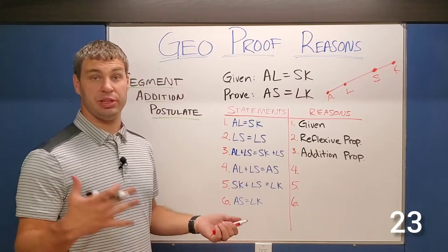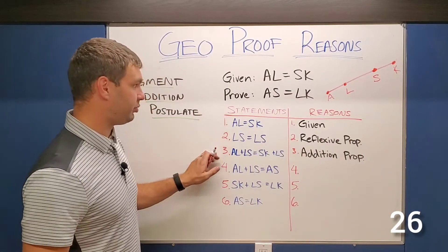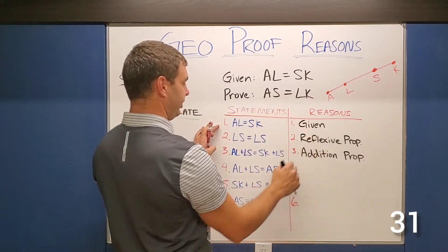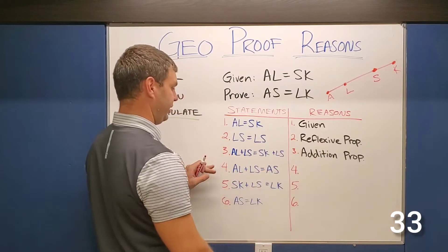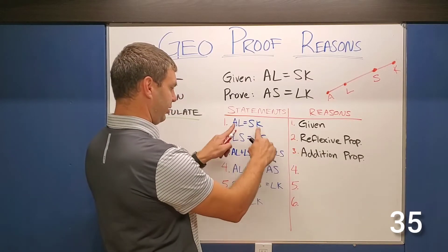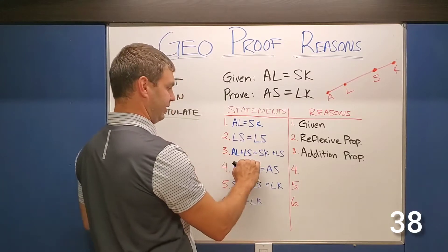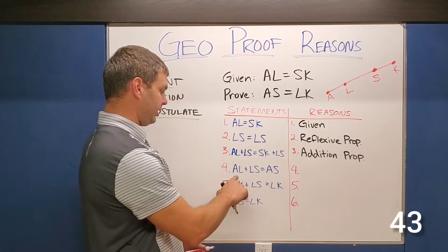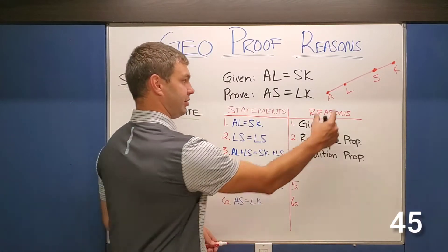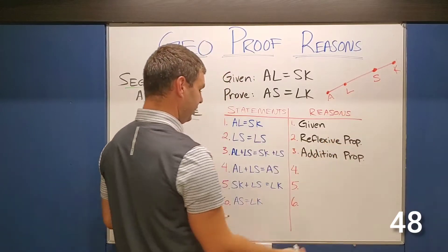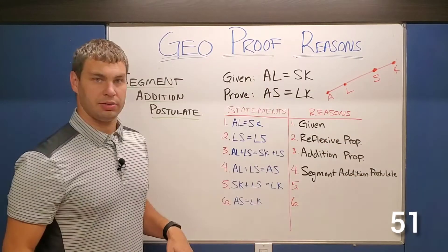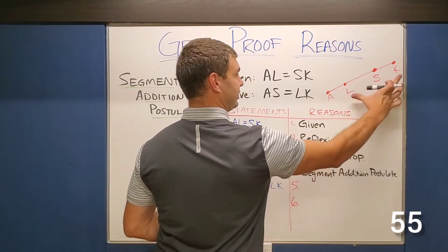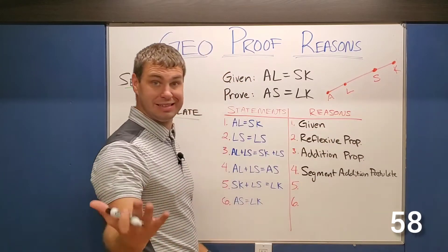Here's a real example of a two-column proof that uses segment addition. I have breezed through the first three steps: given this line, it tells me that AL is equal to LS — that's just gonna be our given. LS equals itself — that's reflexive property. And then if I just add LS to both sides, I have AL plus LS equals SK plus LS by the addition property. Now AL plus LS — the two parts equal the whole — that's gonna be segment addition.